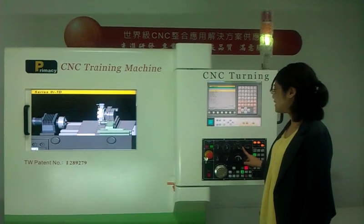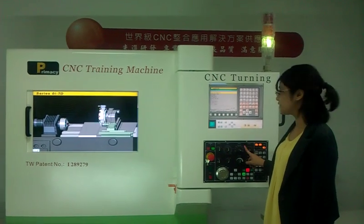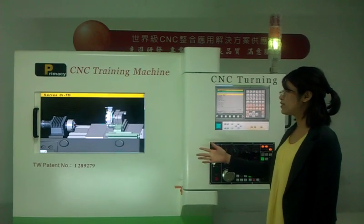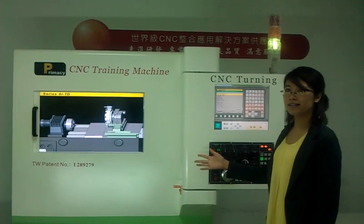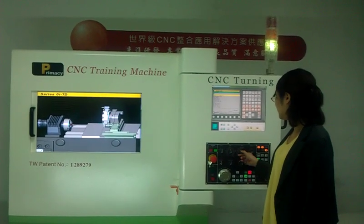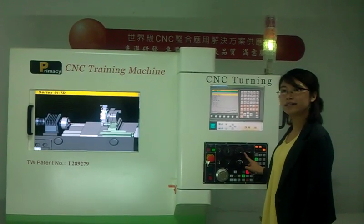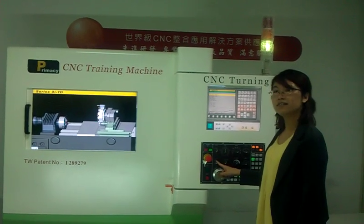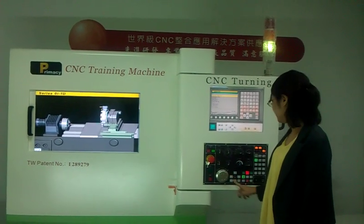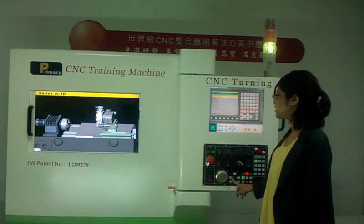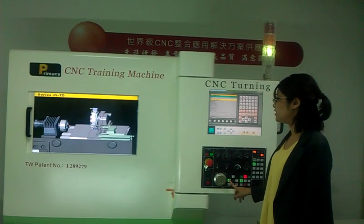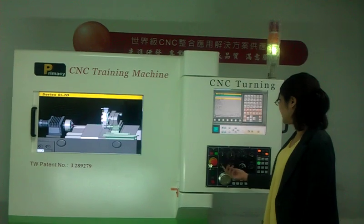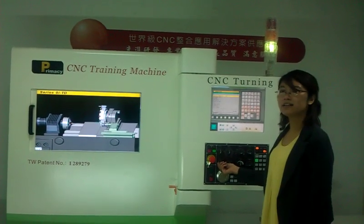During Rapid, Jog, and Handle mode, we can adjust the tool's moving speed. For example, I turn to Rapid mode, choose the Z axis, and press it — you can see it's moving. Then I turn to the X axis.